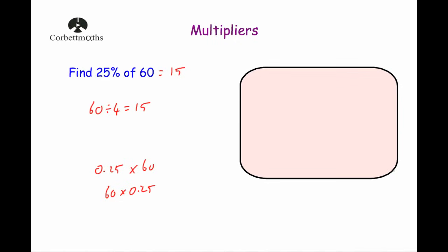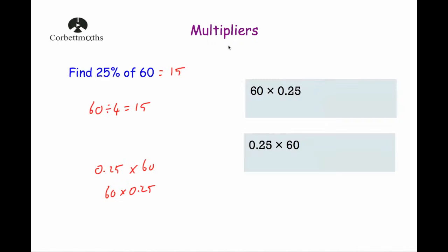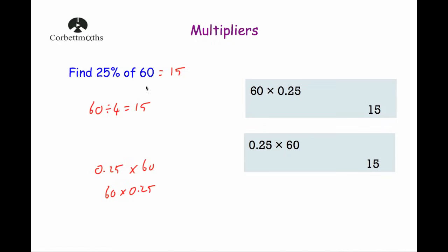So if you get your calculator and type in either 60 times 0.25, or 0.25 times 60, both of those should give you the answer of 15. So to find a percentage of an amount using a multiplier, you just change the percentage into a decimal and multiply the number you're finding the percentage of by that decimal.